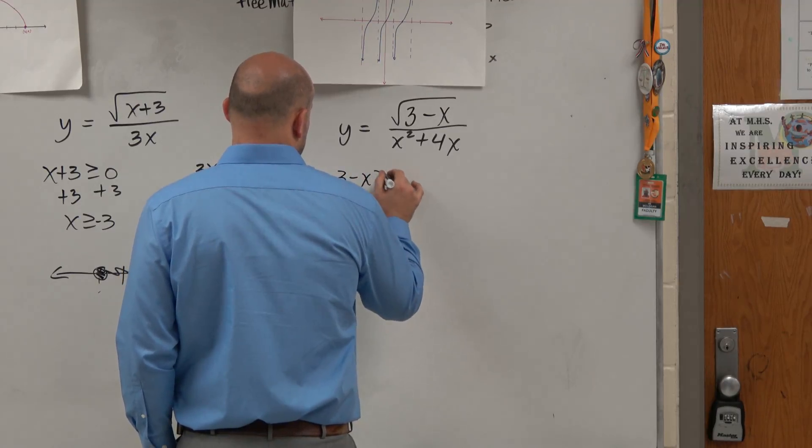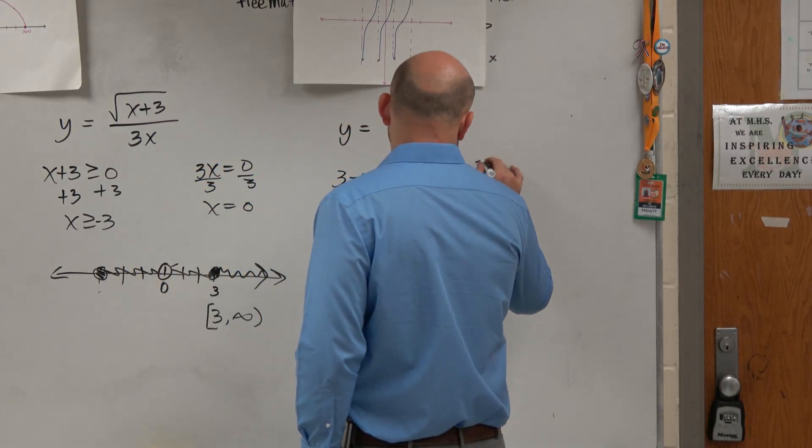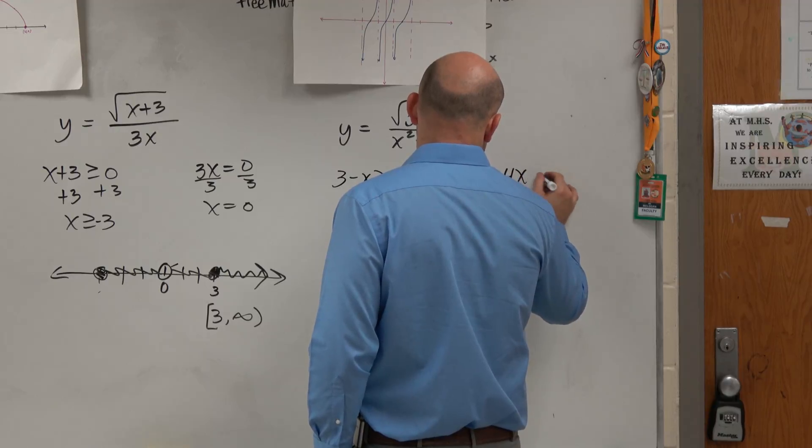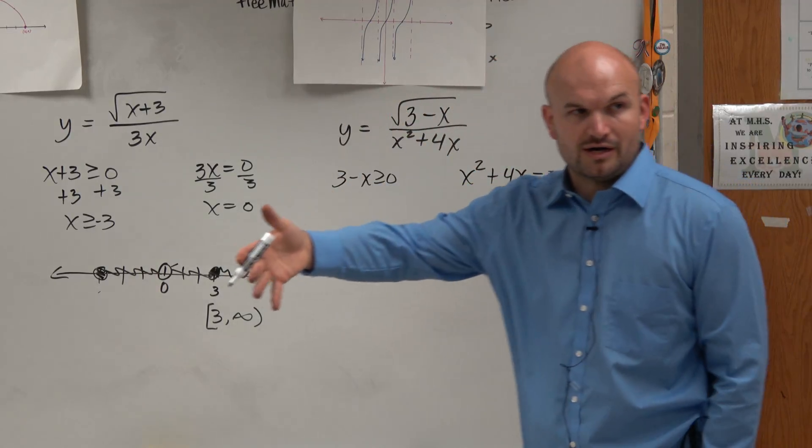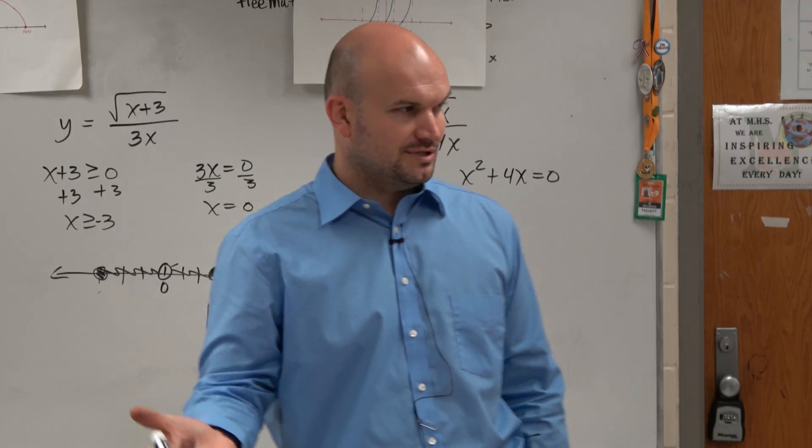3 minus x has to be greater than or equal to 0. x squared plus 4x equals 0. Radicand, greater than or equal to 0. Denominator, equal to 0.